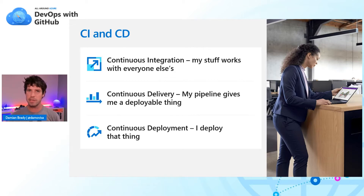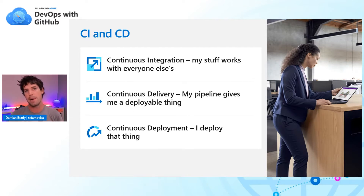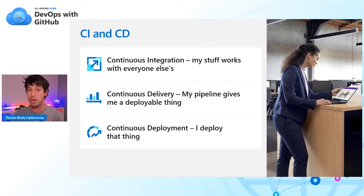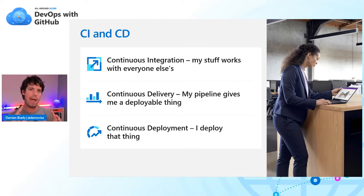Continuous delivery takes that a little step further, making sure that we actually have a deployable thing at the end — not just does our code compile, but what is the thing that we can deploy. This could be an artifact, a bunch of artifacts, or even some scripts to establish the infrastructure we need. The idea is that at the end of that process, you have a thing that you can deploy when you want to deploy it.